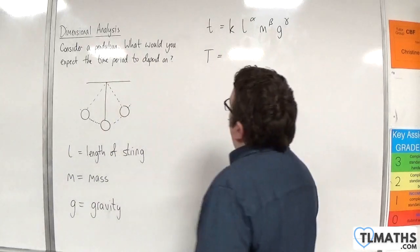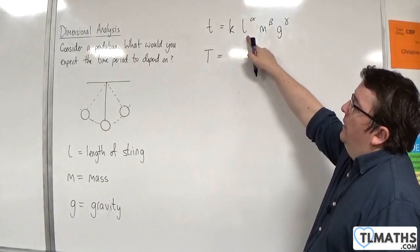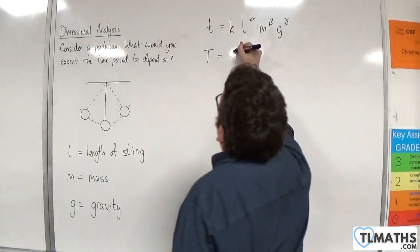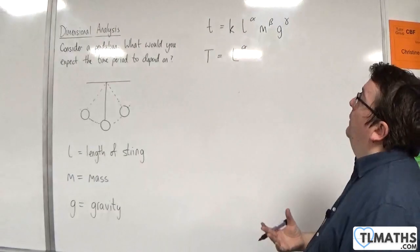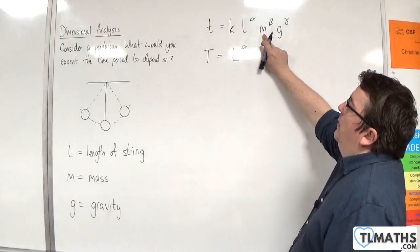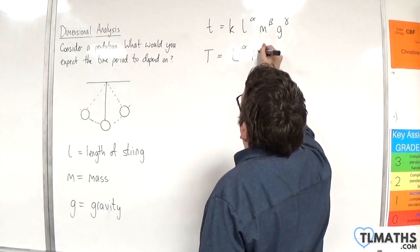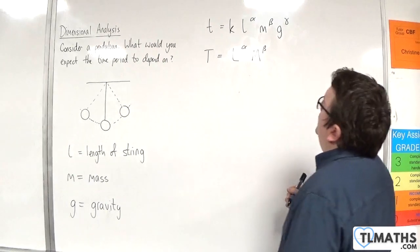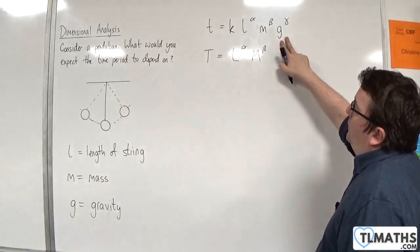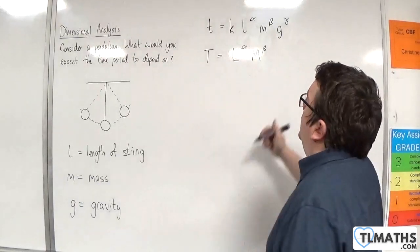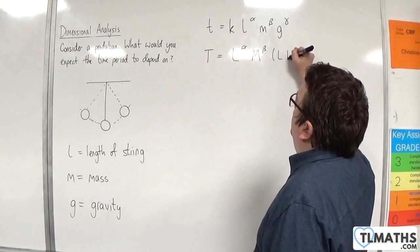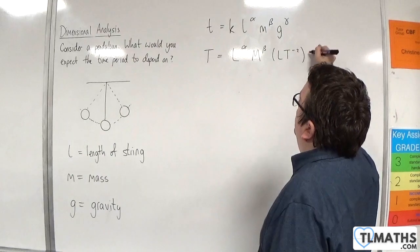For the right-hand side, we would have L, which is a length, so that's L to the alpha. We can ignore K because it's dimensionless. Then we've got a mass, capital M, to the beta. And then we've got gravity, which is an acceleration, so meters per second per second, so that would be L T to the minus 2 to the gamma.